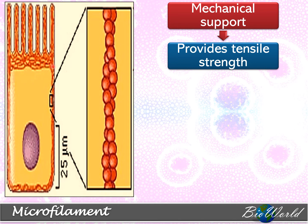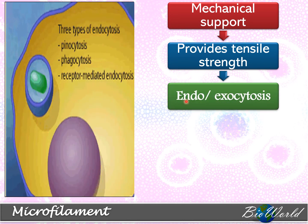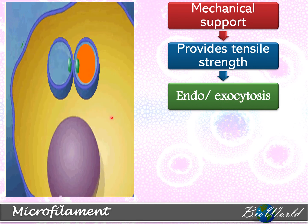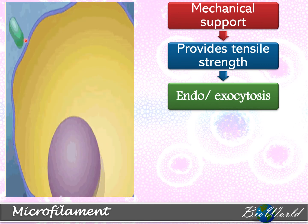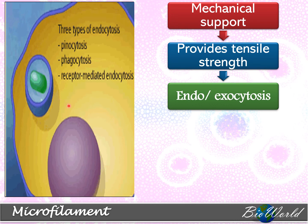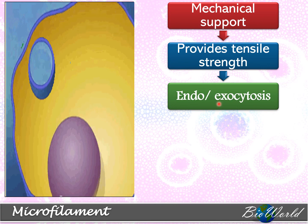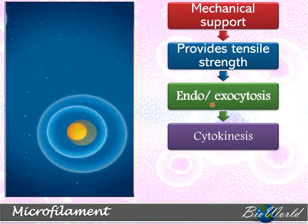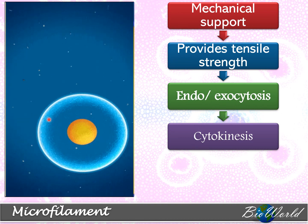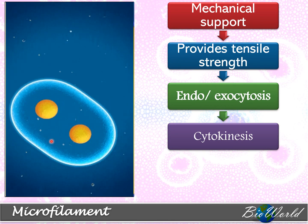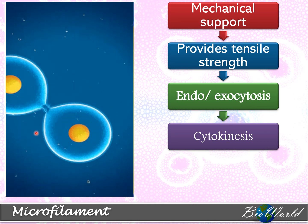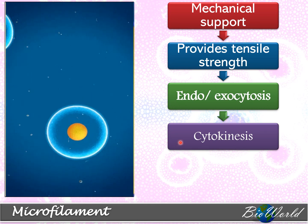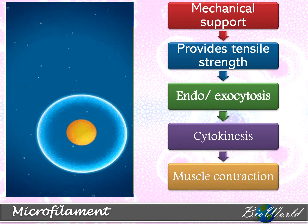Since microfilaments are just below the plasma membrane, they are able to control the shape of the plasma membrane. This ability is very useful in processes known as endocytosis or exocytosis. In endocytosis, the plasma membrane folds inwards, and when the vesicle fuses with the plasma membrane and forms outwards, that is exocytosis. Another function of microfilaments is during cytokinesis, when the plasma membrane forms a cleavage furrow inwards with the help of microfilaments. Finally, microfilaments are also necessary for the process of muscle contraction.